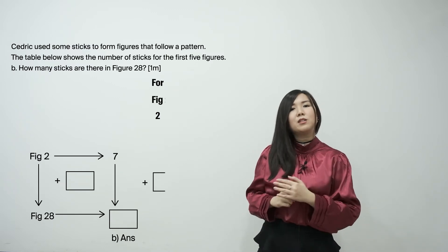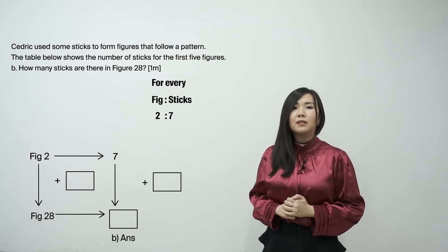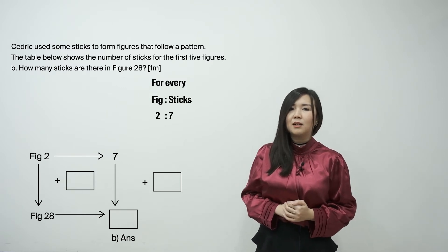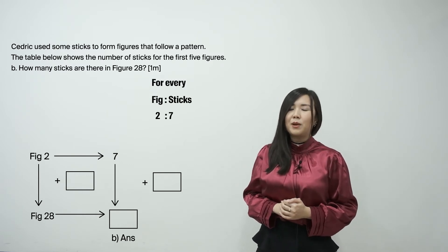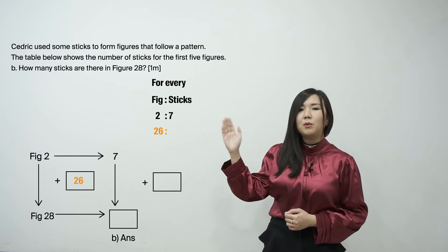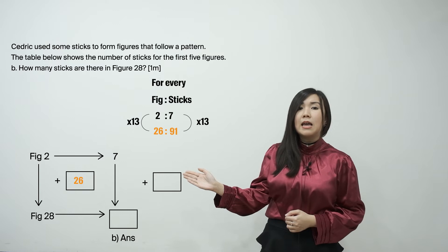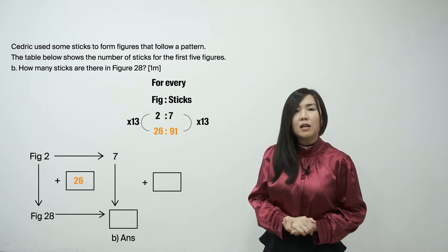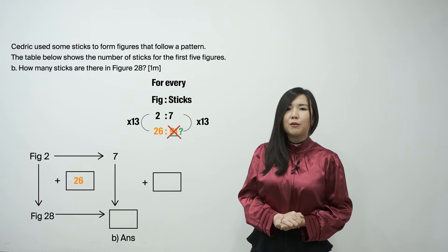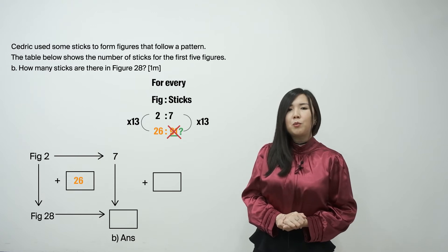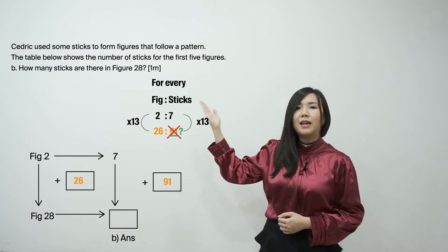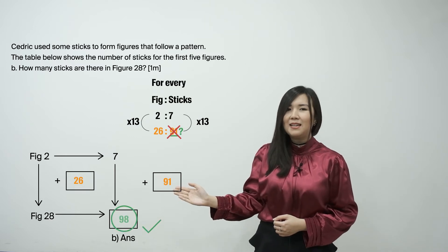So if we use figure 2 as base, how many more figures to figure 28? 28 minus 2 equals 26 — we need 26 more figures. For every 26 more figures, we will get 91 more sticks. Is the final answer 91 sticks? No! So with the box and arrow technique, we will remember to add 91 sticks to the 7 sticks in figure 2, to get 98 sticks for part B.